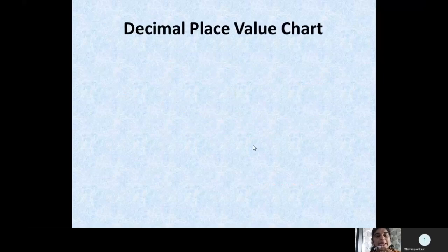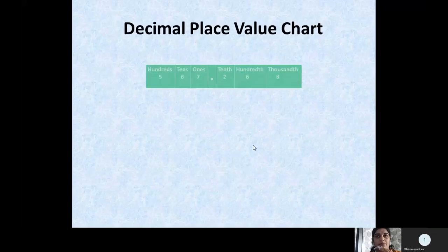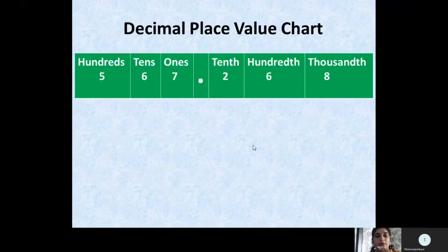Now let us have a look at the decimal place value chart. In the decimal place value chart, we put the decimal in the center. Before the decimal we have ones, tens, hundreds, and so on. After the decimal we have the places tenth, hundredth, and thousandth.